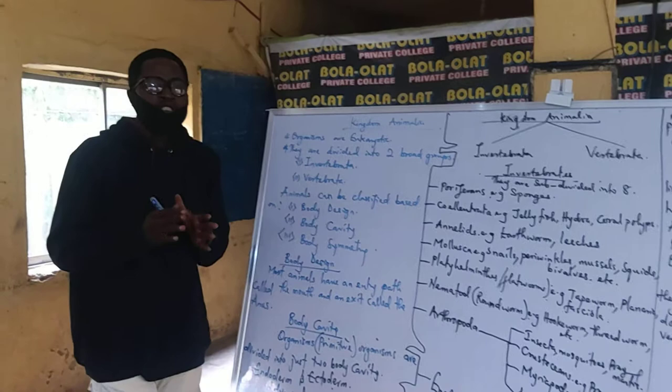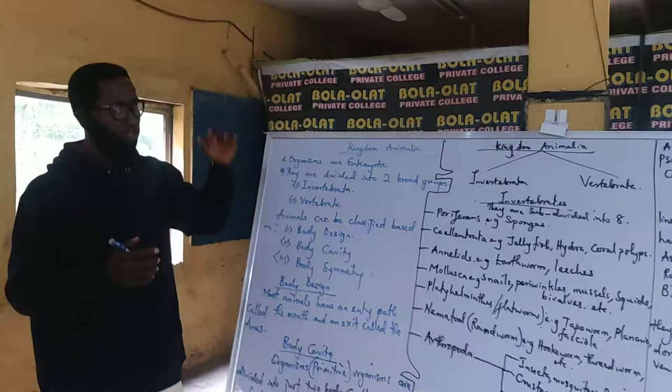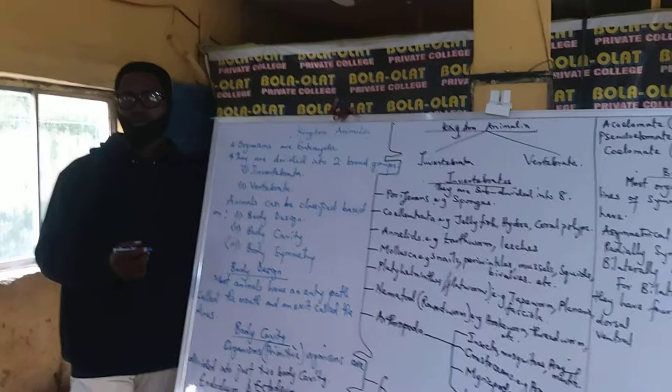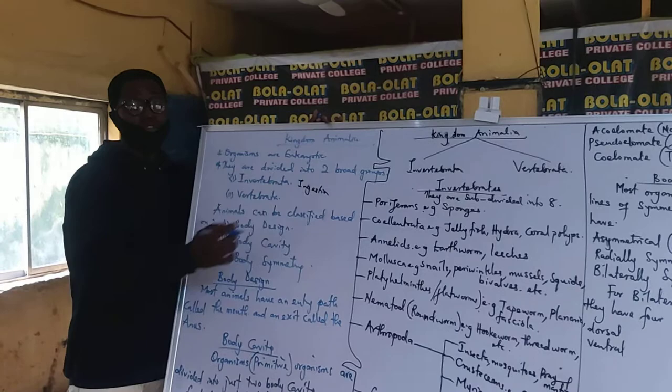The anus is the part where undigested food particles exit the body. If it doesn't get out, it should be a disturbance to the body. The mouth is used for mechanical digestion, which is also called chewing — we call it ingestion. Ingestion means the taking in of food. All animals do that.